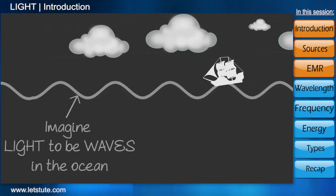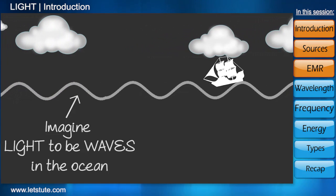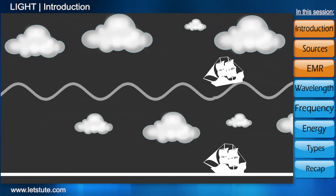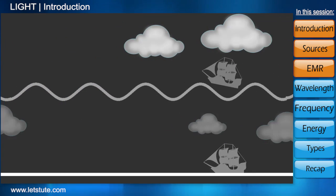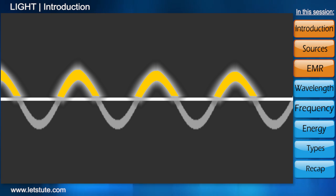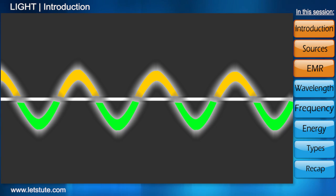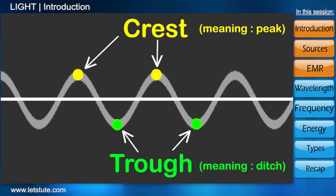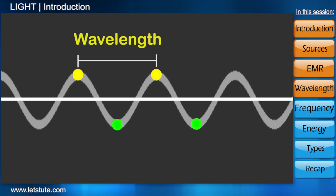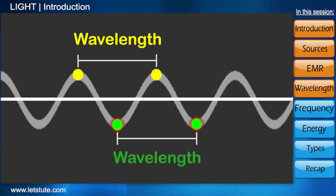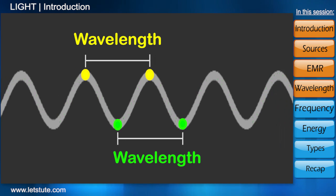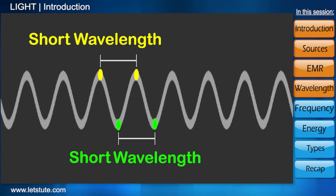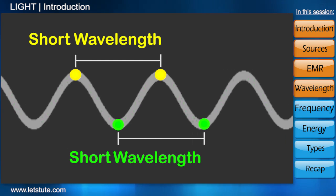Imagine the light that we know to be represented in the form of waves in an ocean like this. What differentiates a wave from calm waters is the presence of an area of elevation and an area of depression. In terms of our representation the elevated area is called a crest while the depression is called a trough. Wavelength is nothing but the distance between two successive crests or two successive troughs. The smaller the distance between the crests or troughs the shorter the wavelength and vice versa.